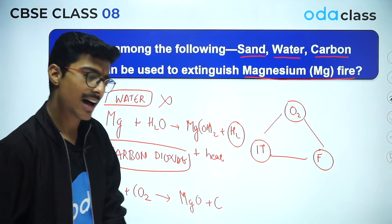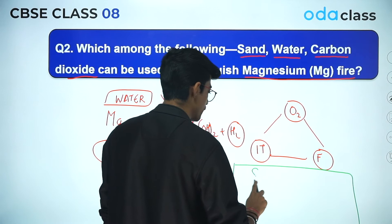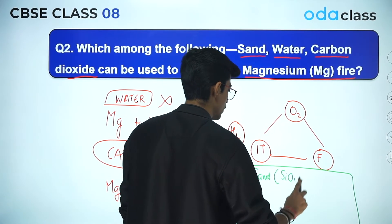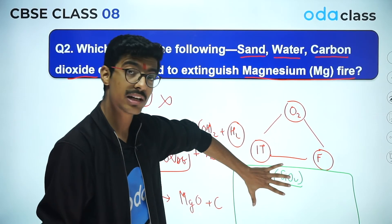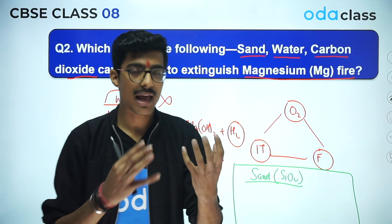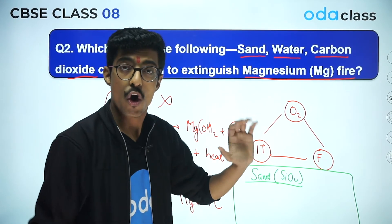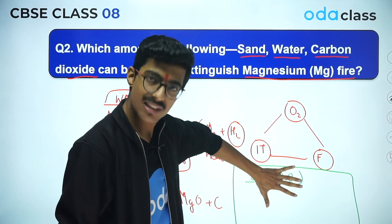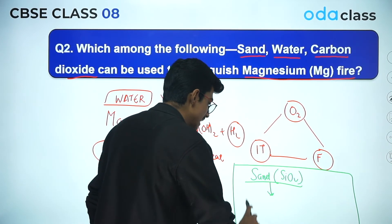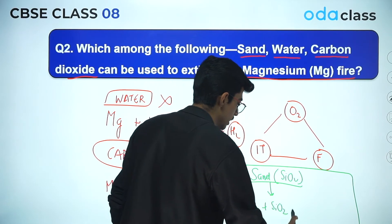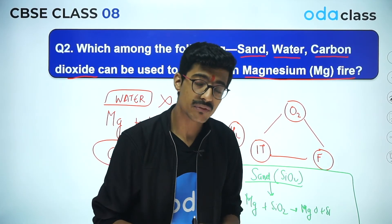So the third option is sand. Now, exceptions are always there — listen carefully. Sand is SiO₂. If the magnesium fire is small scale, then you can use sand to extinguish it. But if the amount of magnesium and sand is similar, don't use it — because magnesium is a naughty metal, it will also react with SiO₂. The reaction gives MgO plus Si plus a lot of heat, causing a dangerous explosion and the fire will be continued.